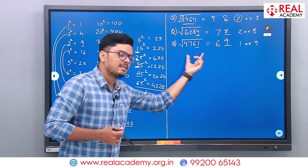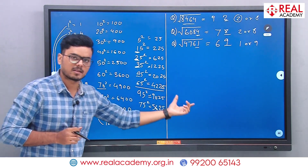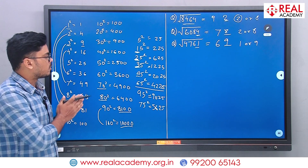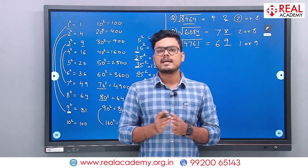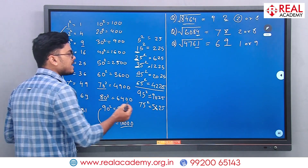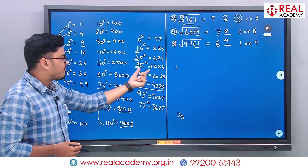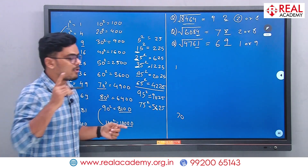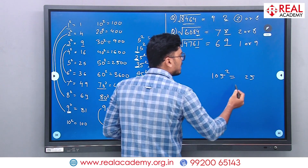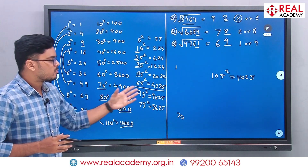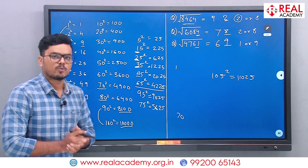That is how you can estimate the square root of any number — provided it is a perfect square, which is the important condition. This method works for numbers less than 10000. For higher numbers, if you know the squares of 1 to 20, you can apply the same logic. The x5 trick also works for numbers like 105: last digits are 25, and 10×11=110, so 105 squared is 11025. Thank you very much — we will end the video here.